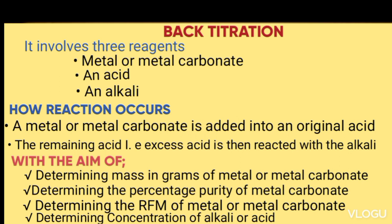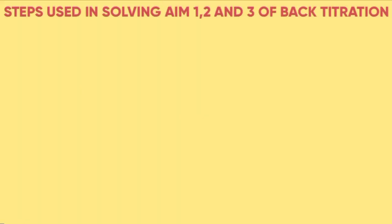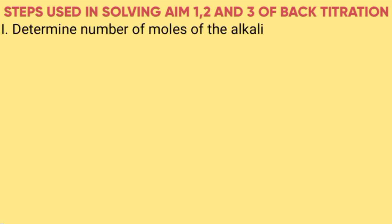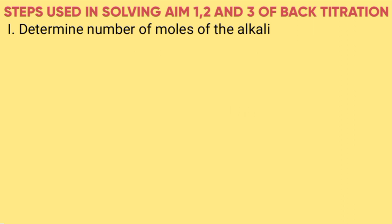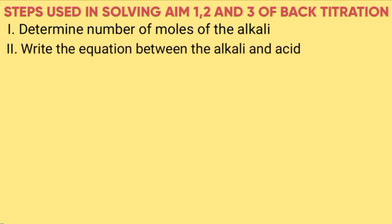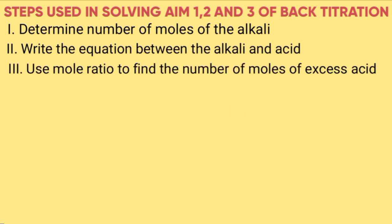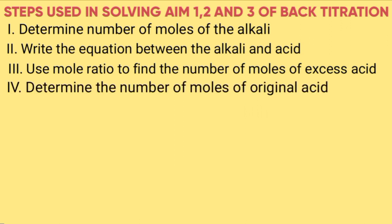For aims 1, 2, and 3, the steps followed to answer any of those aims are as follows. Step 1: determine the number of moles of the alkali by taking MV over 1000. Step 2: write the equation between the alkali and the acid. Step 3: use mole ratio to find the number of moles of the excess acid. Step 4: determine the number of moles of original acid by taking molarity times volume over 1000.